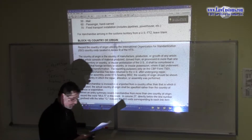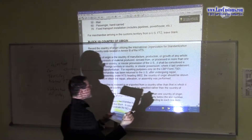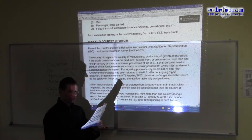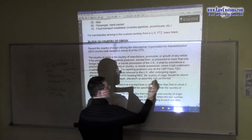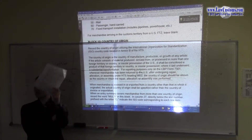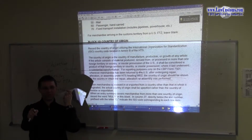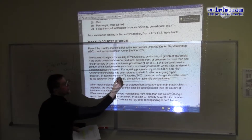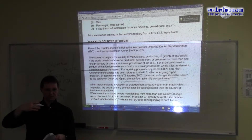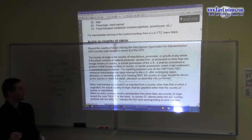Regarding special category 9802: if this is 9802, the country of origin should be shown as the country in which the repair, alteration, or assembly was performed. So if my watch broke, is under warranty, and is being fixed in Canada — I ship it to Canada and it comes back after they fixed it. When it comes back from Canada, I declare Canada, even though it's the same watch and they just fixed one screw.